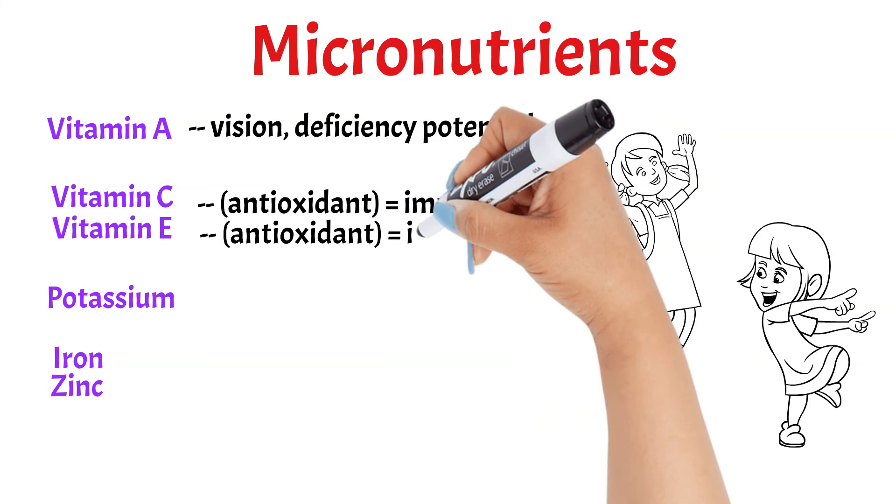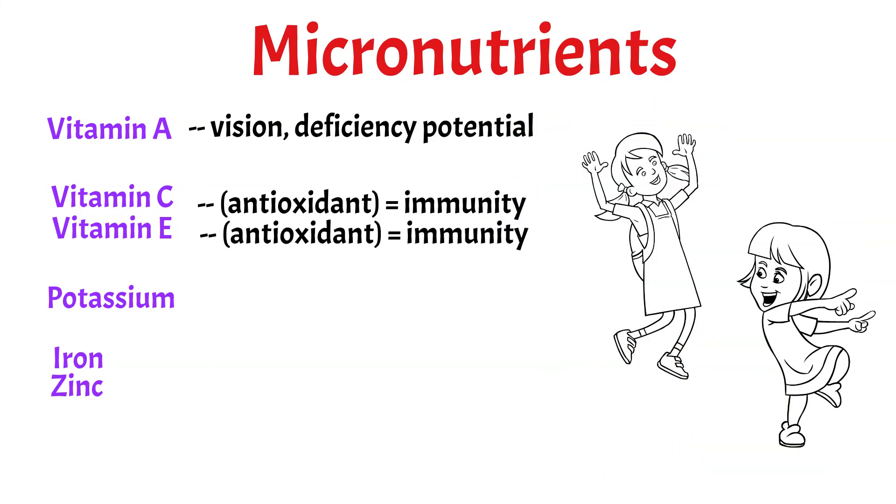Vitamins C and E are antioxidants that strengthen our immunity. Potassium deficiencies are rare in the states, but it can occur alongside bouts of vomiting and diarrhea in children of this age.